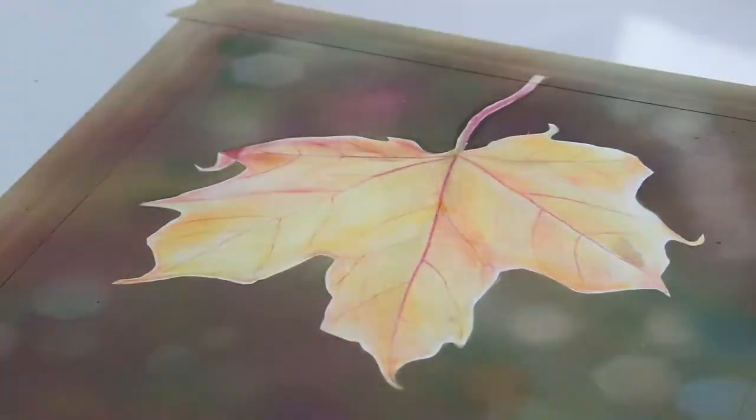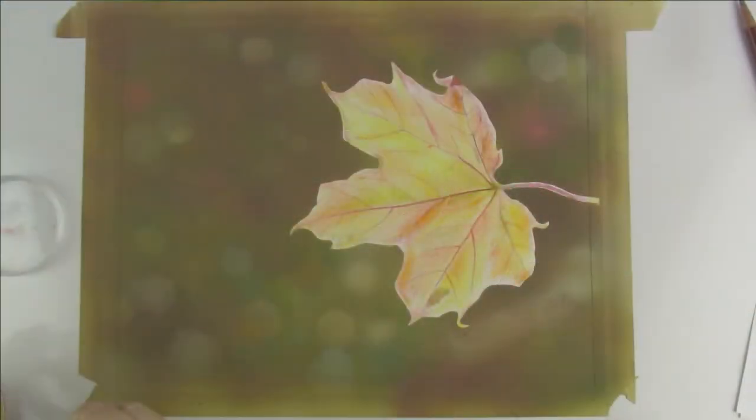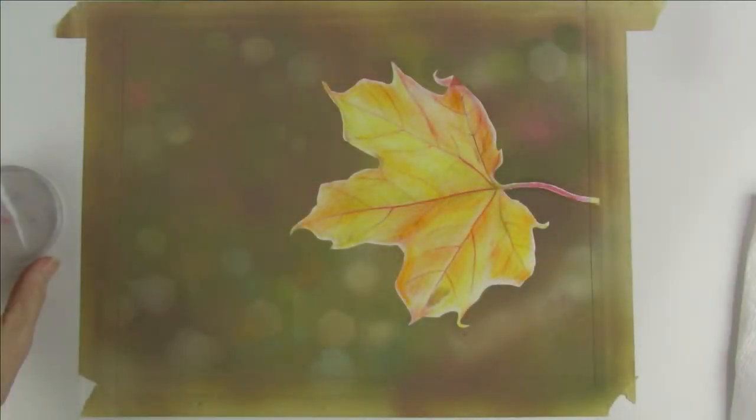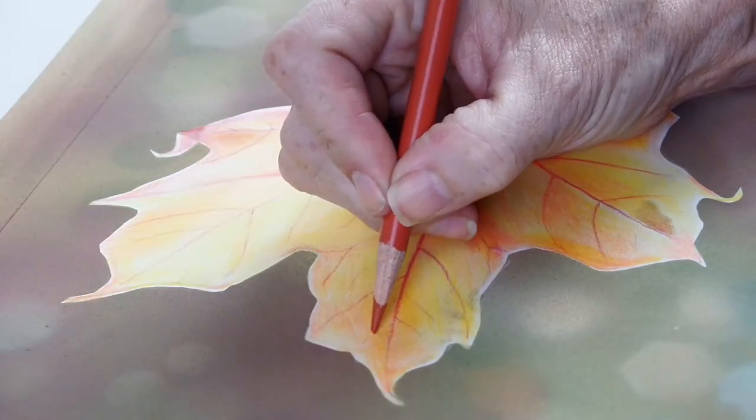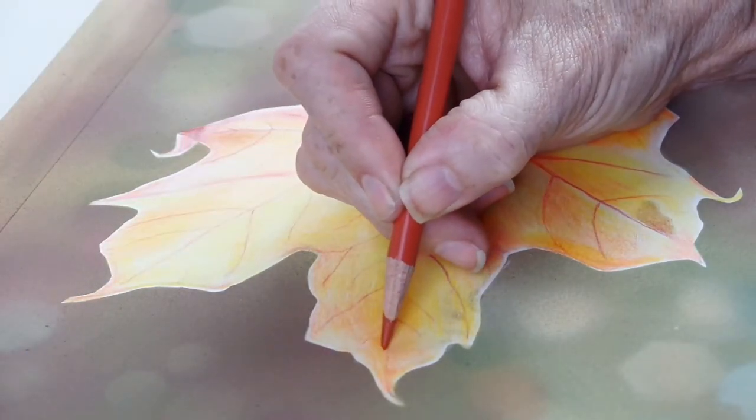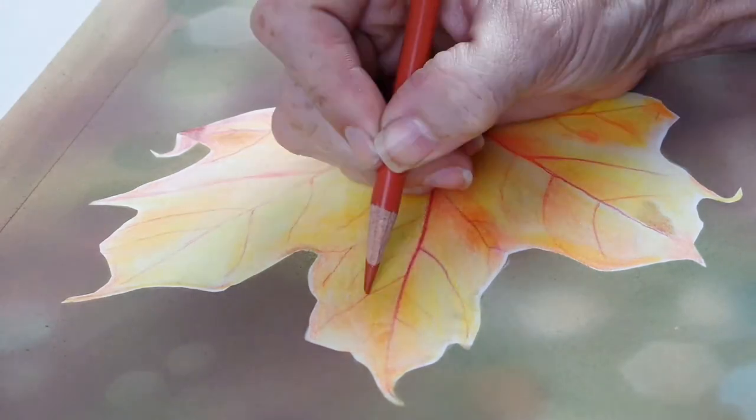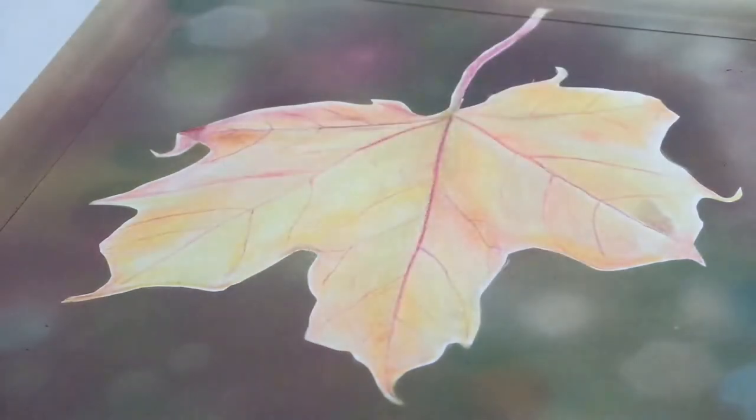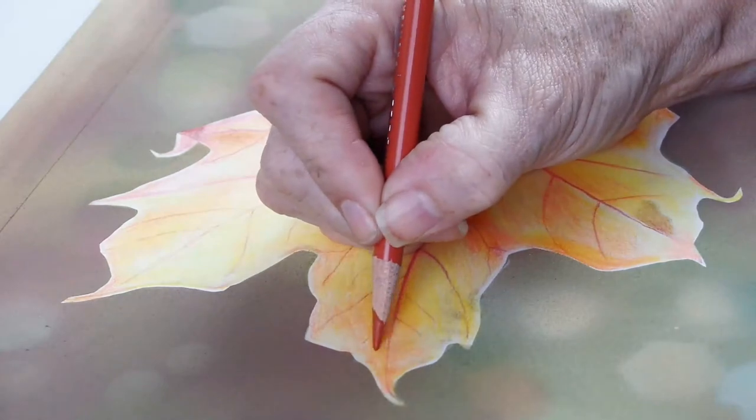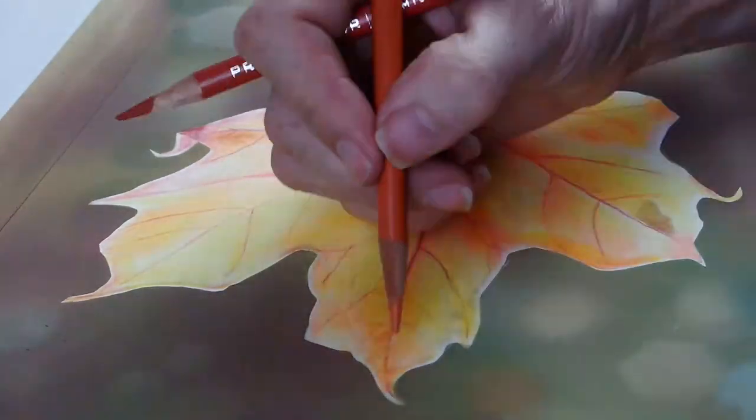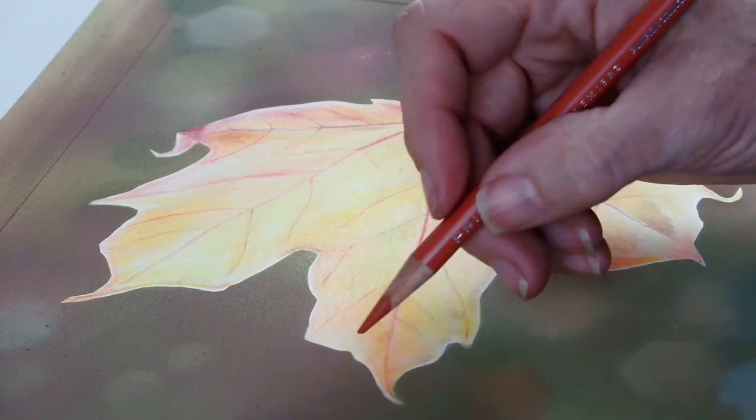And to give you a better idea, here is a picture of before the solvent was applied and here is a picture after. Now, once the solvent has dried completely, you can apply another layer of colored pencil on top. But you have to make sure that the solvent dries completely.